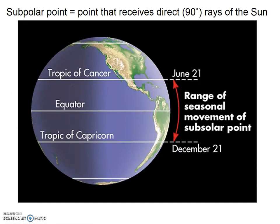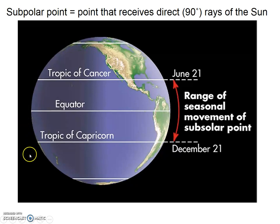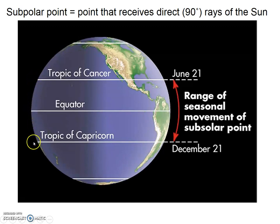The point on the Earth that gets the 90-degree direct rays of the Sun is called the sub-solar point. As noted in this diagram, the sub-solar point migrates north and south between the Tropic of Cancer and the Tropic of Capricorn throughout the year. The Tropic of Cancer and the Tropic of Capricorn each have one day of the year where they get the direct rays of the Sun. Everywhere in between the two tropics actually gets the direct rays of the Sun twice a year — once as the point migrates up and once as the point migrates down.